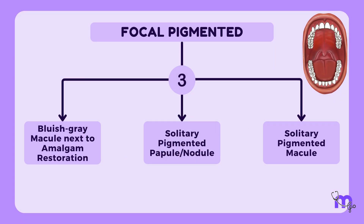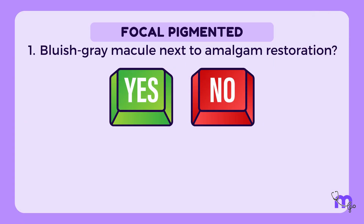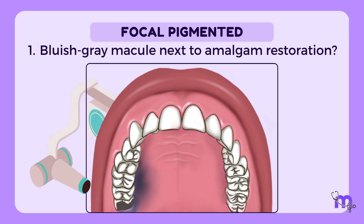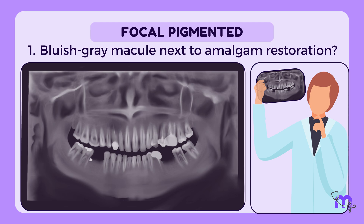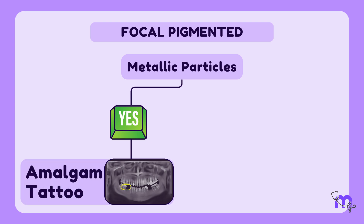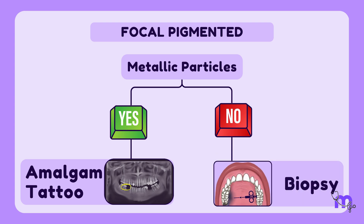If the answer to the first question is yes — meaning it's a bluish-gray macule next to an amalgam restoration — a dental radiograph is recommended. The dentist then checks the radiograph for the presence of metallic particles. If metallic particles are observed, the diagnosis is likely an amalgam tattoo. If no metallic particles are seen, a biopsy is advised to definitively confirm or rule out an amalgam tattoo.